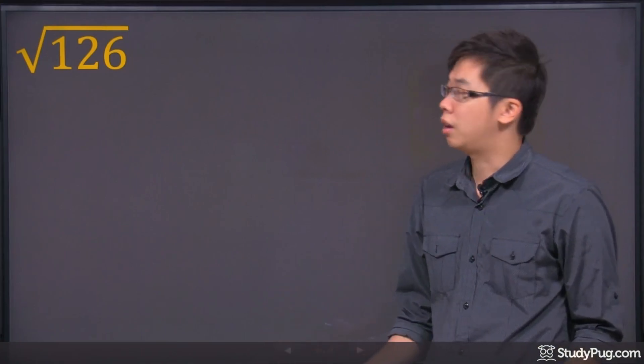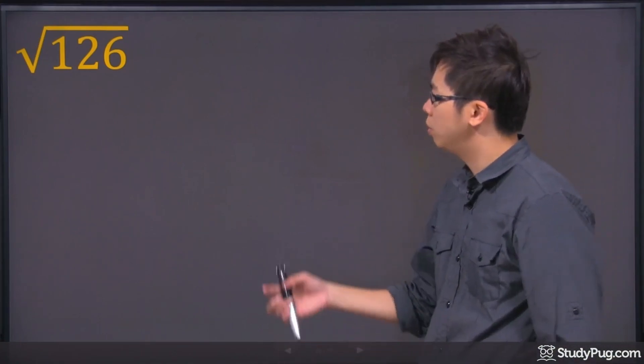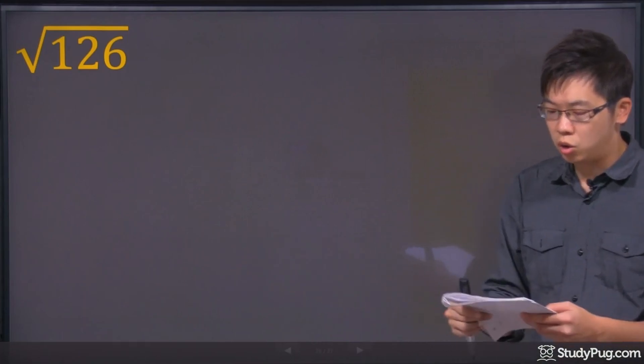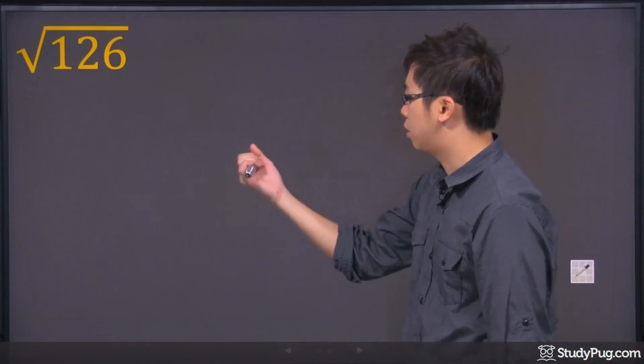But let's say you don't have a calculator and the teacher said you can't use it. So if you're going to simplify this, you're going to have to use the prime factorization on the side.